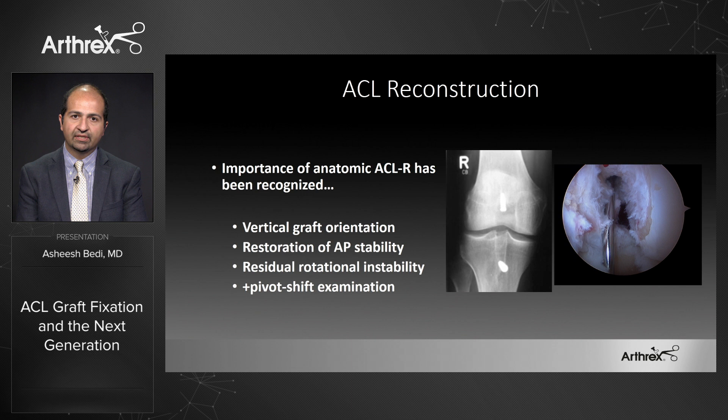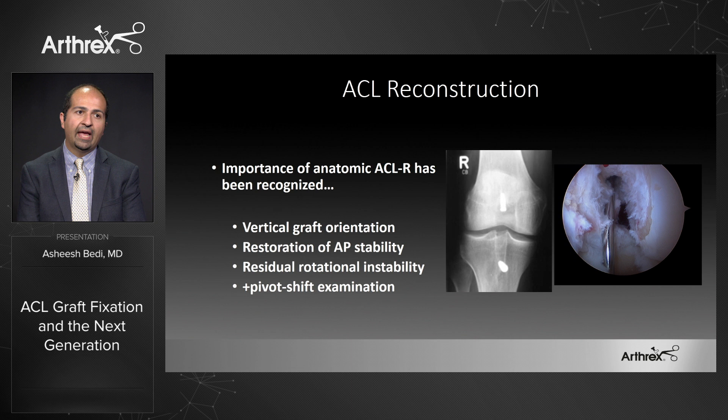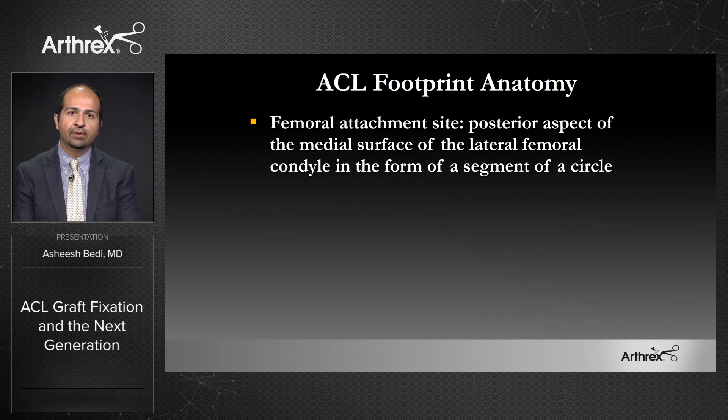The importance of this has been recognized. Many of us have seen images like the one on screen here — a vertical graft orientation that gives good sagittal plane stability. We sometimes don't appreciate instability on a Lachman or drawer test, but these knees are still rotationally unstable and still have residual pivot shifts that athletes feel when they return to cutting and twisting sport.